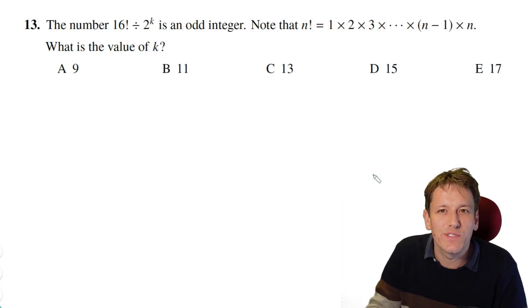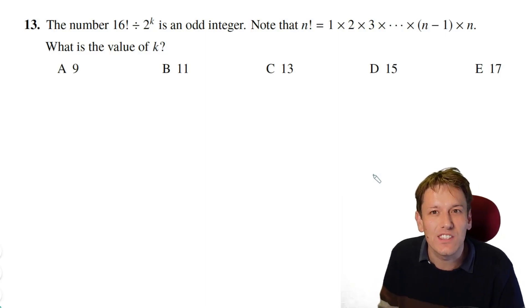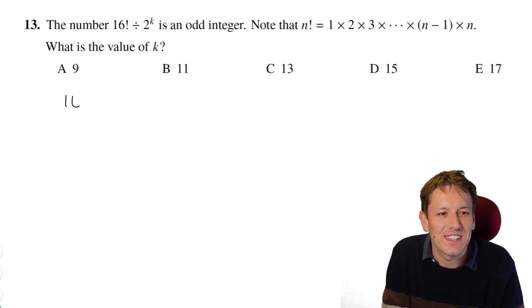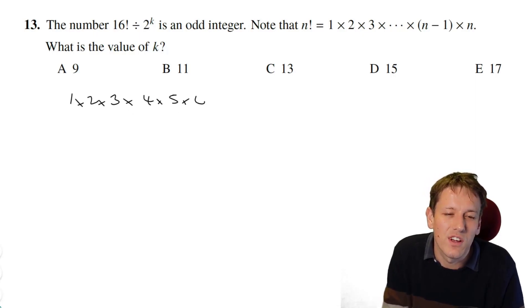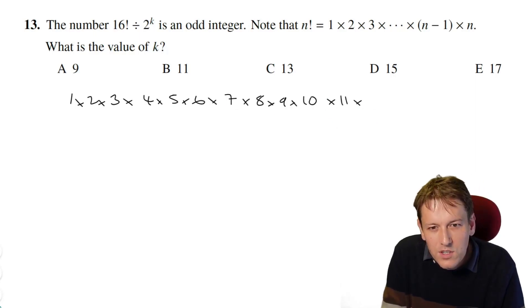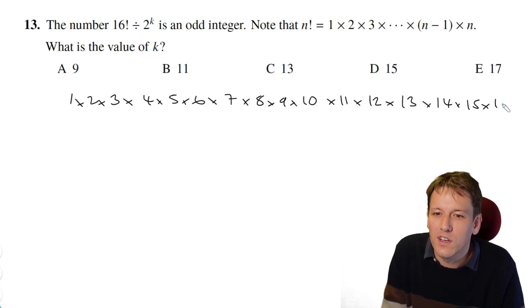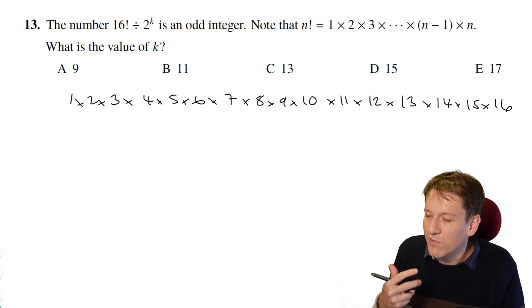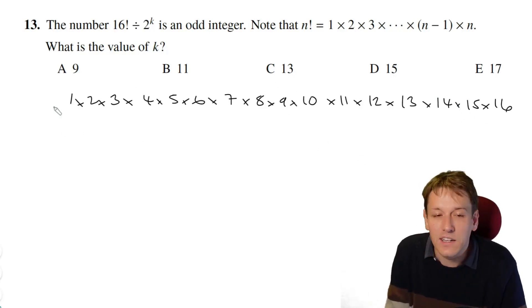So the number 16 factorial divided by 2 to the k is an odd integer. 16 factorial, I'm actually going to write out in full here because it's going to be useful. So it's 1 times 2 times 3 times 4, all the way up to 16. Now, if I'm going to divide this by 2 to a power, and I'm going to end up with an odd number, all of the factors of 2 have to have disappeared.